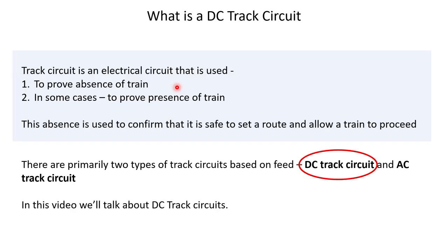It's in the name that track circuits is an electrical circuit that is used for train detection. Most of the train detection systems are actually train vacancy detection systems, in that they detect whether the section is vacant or not. There are very few scenarios in which a track circuit is actually used to detect occupancy — for example, in a remote area you could use a track circuit to detect the train, and based on that occupancy trigger something else, like a level crossing.